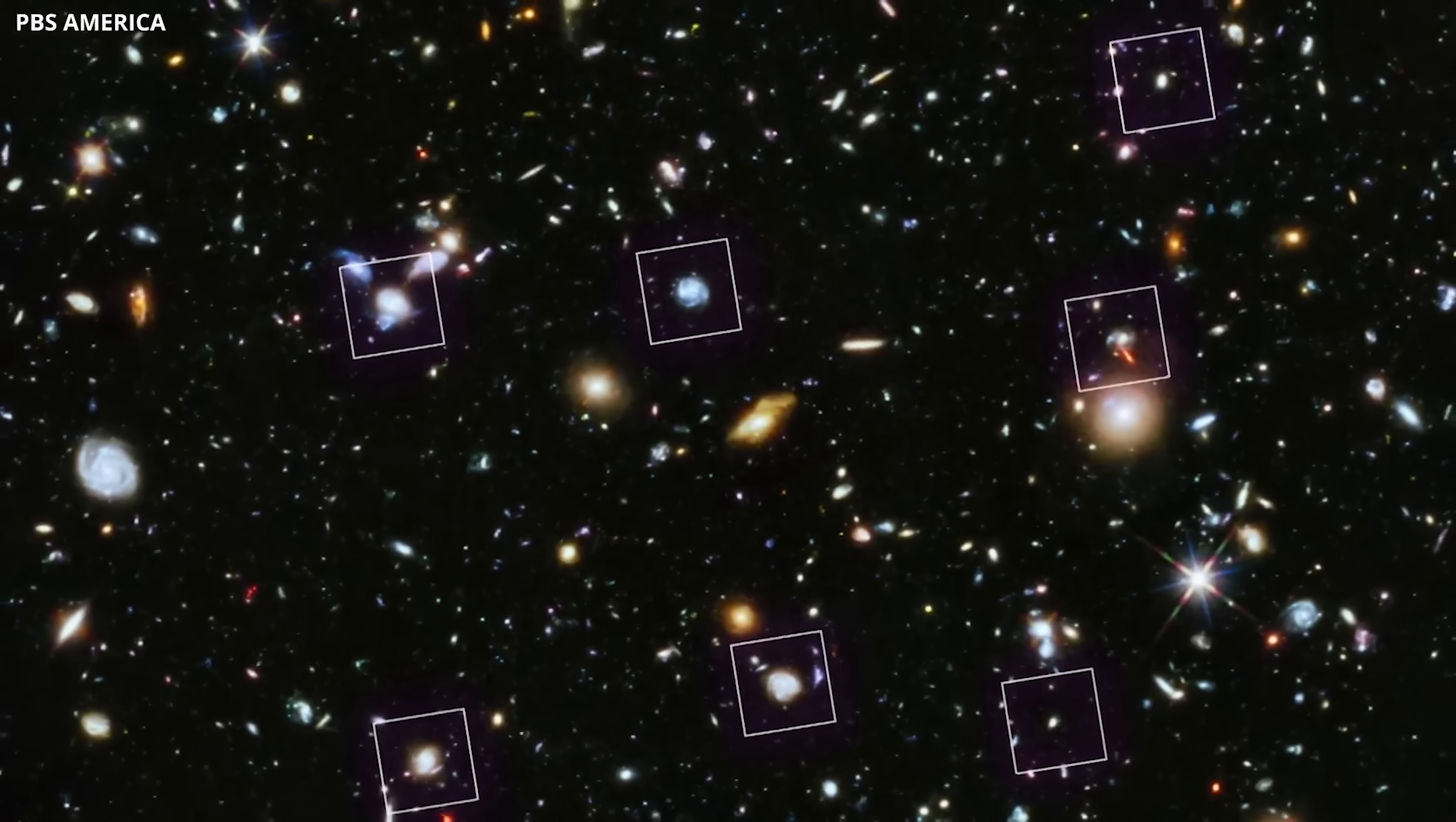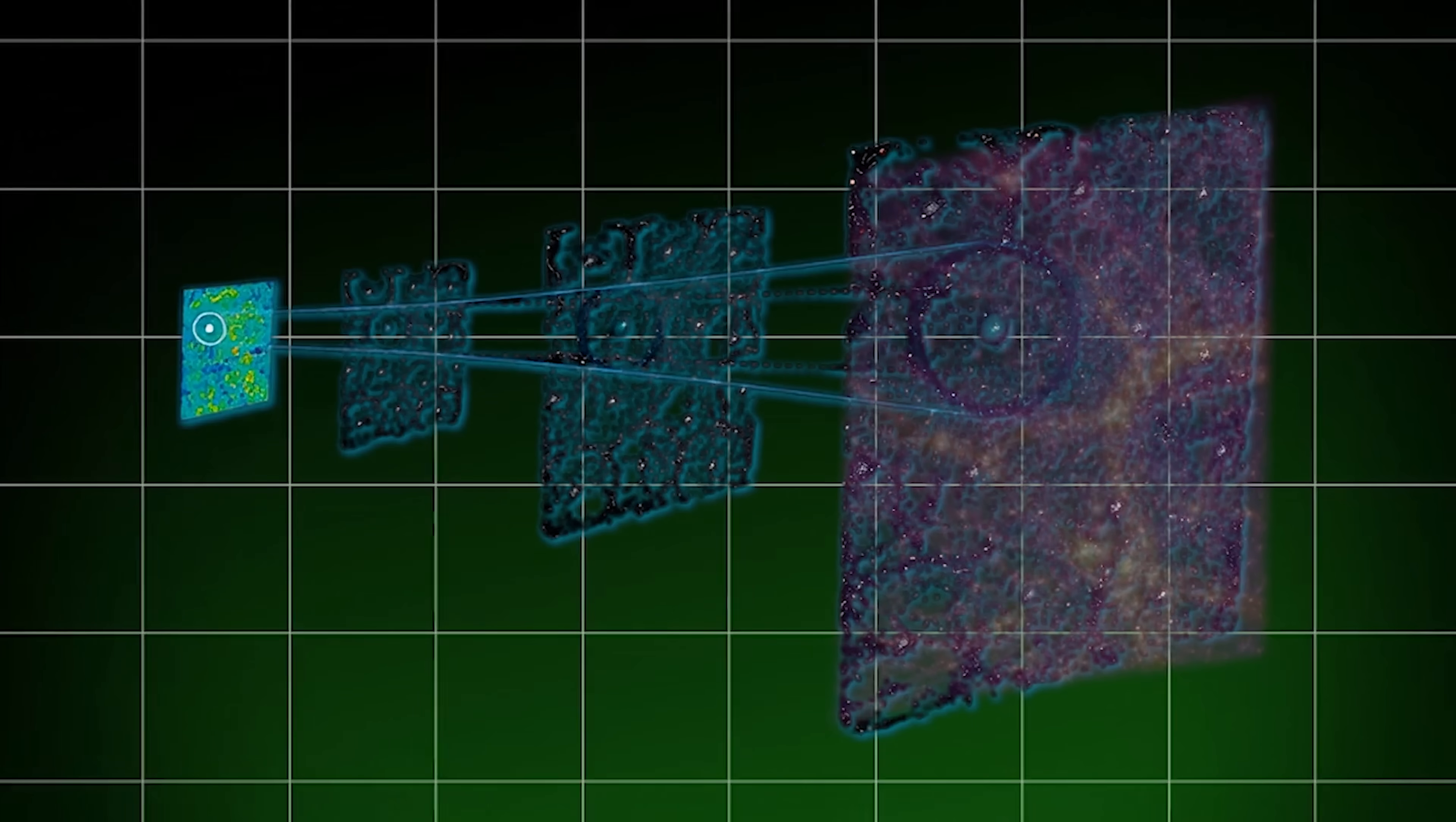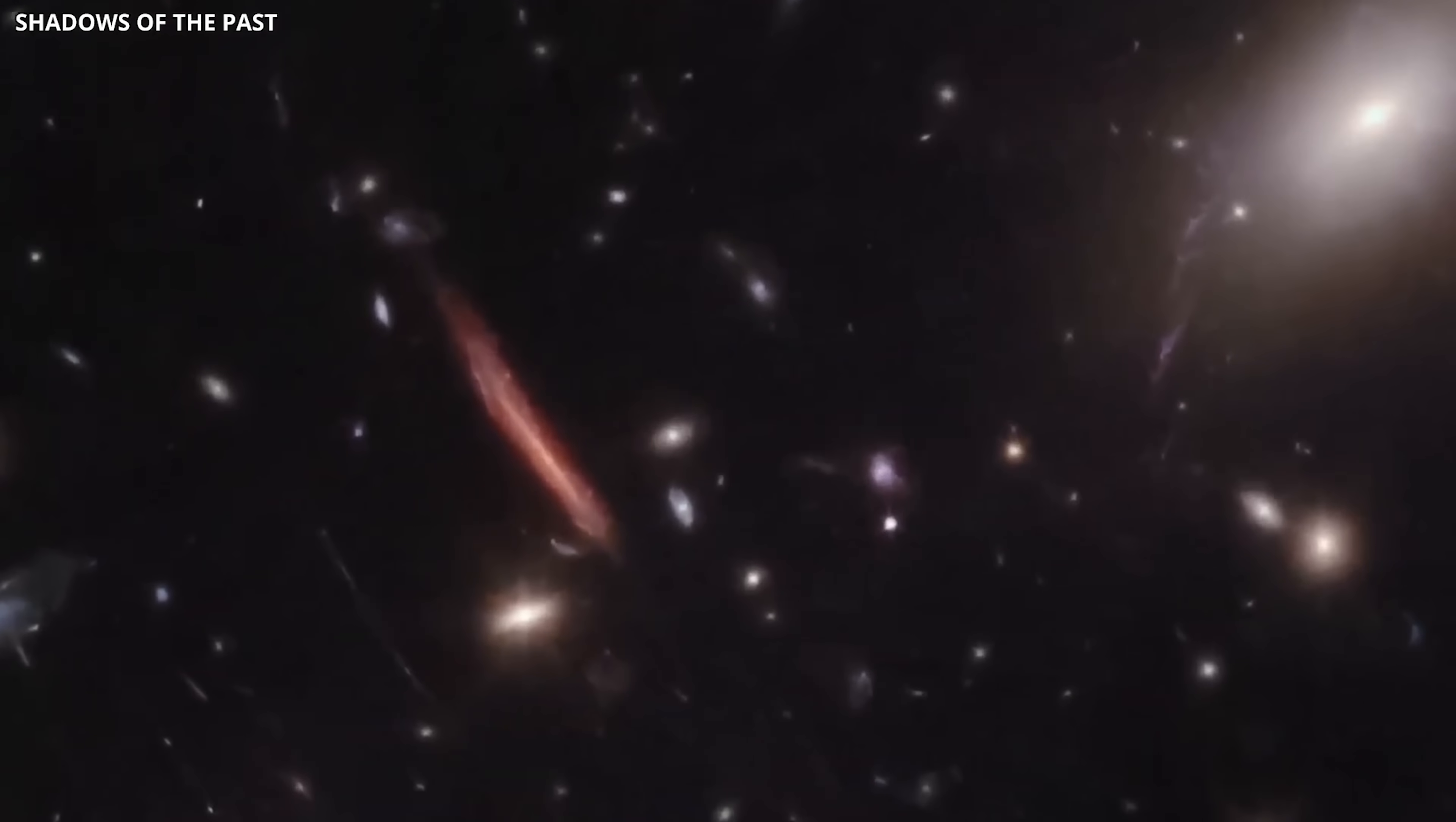Now, envision this phenomenon throughout the entire universe. Over time, the voids progressively constitute a larger portion of the cosmos because they are expanding at a quicker pace. Consequently, when we examine the universe, it creates the impression that the overall expansion is accelerating. However, in this model, there is no necessity to invoke dark energy. Rather, the more rapid expansion within the voids inherently explains our observations.